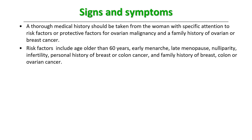Any woman who attained menarche early and menopause late suggests her ovaries have been active for a longer period. Some researchers think this continuous ovulation gives a risk for ovarian cancer — there is trauma to the ovary, and this theory can give rise to epithelial tumors. Nulliparity suggests no pregnancy, meaning no long periods of anovulation; the ovaries were constantly ovulating, which is how it is linked to ovarian cancer risk. Infertility — again, no pregnancy, more risk.